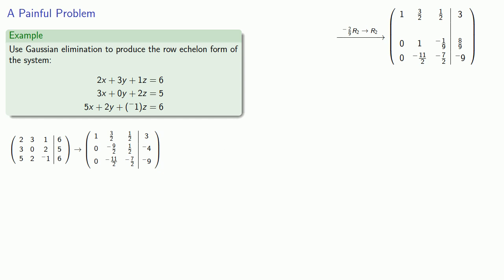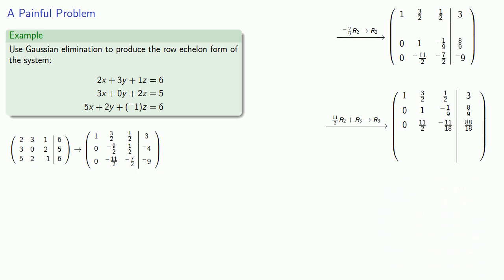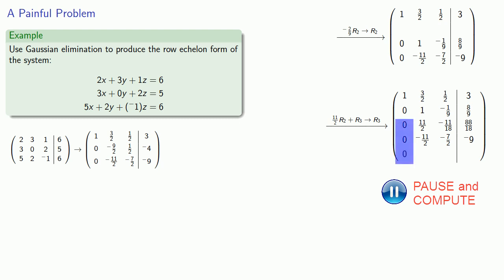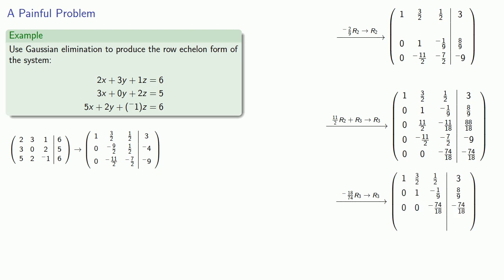Next, since the leading entry in the third row is -11/2, we multiply the new second row by 11/2 and add it to the third row to eliminate that leading entry. Multiplying row 2 by 11/2 gives: 0, 11/2, -11/18, and 88/18. Adding to the third row: 0 + 0 = 0, 11/2 + (-11/2) = 0, -11/18 - 7/2 = -74/18, and 88/18 - 9 = -74/18. Multiplying the third row by -18/74 makes it [0, 0, 1, 1].